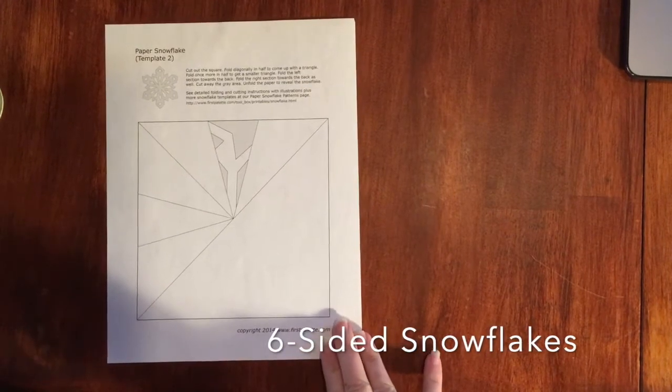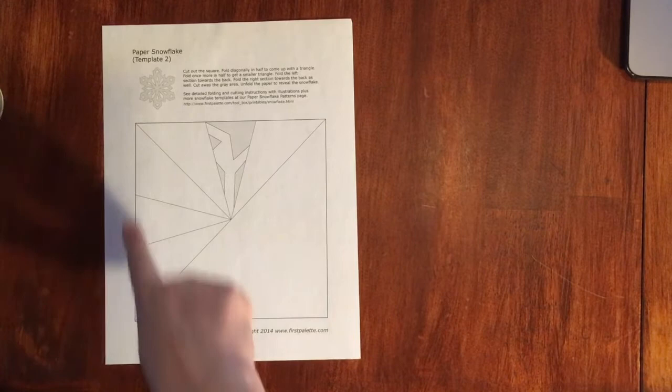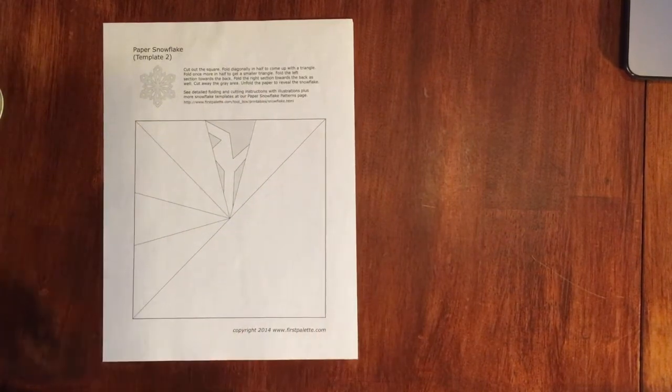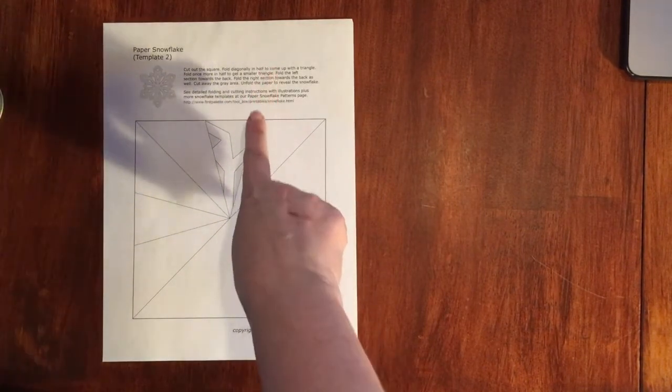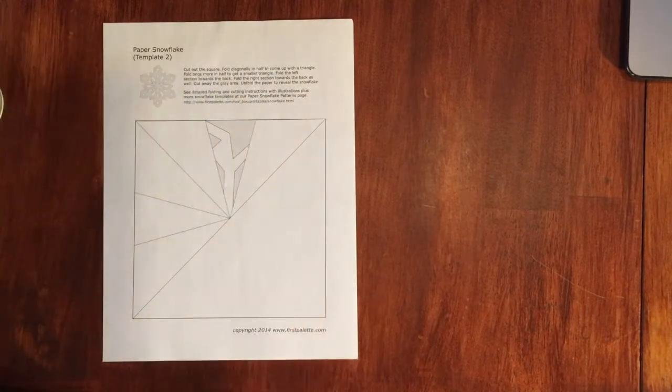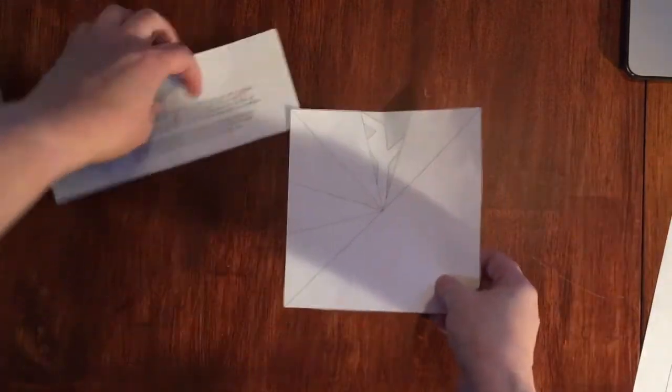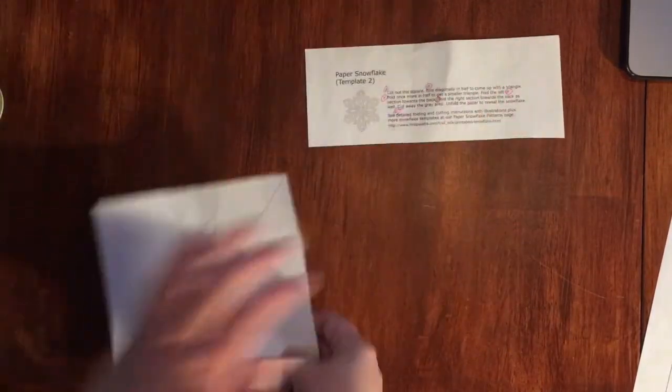We're going to make spectacular snowflakes. Here's a sample of one of our templates. The directions are at the top, so when you get one of these and cut around the square, be sure to keep the directions to help you. I have one that's already cut out. I kept my directions.